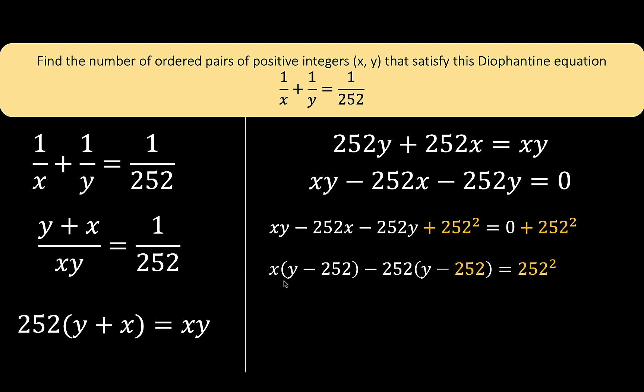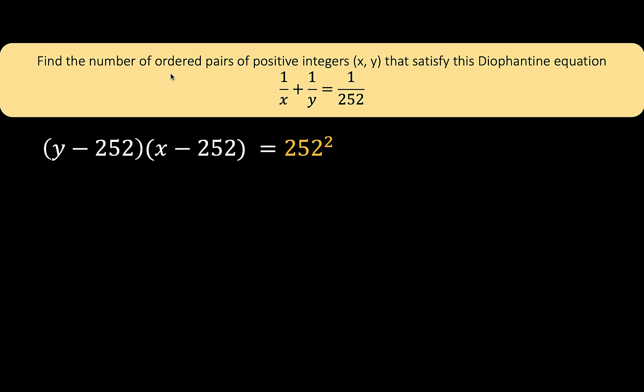Notice that y minus 252 is common, and factoring that out gives us the result. That is the reason why we added 252 squared to both sides, so that we'll be able to rewrite it in a clean factored form. Let's focus now on this last equation. We are looking for the set of ordered pairs of positive integers x, y that will satisfy this modified equation based on the given equation.